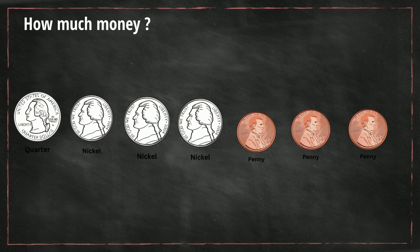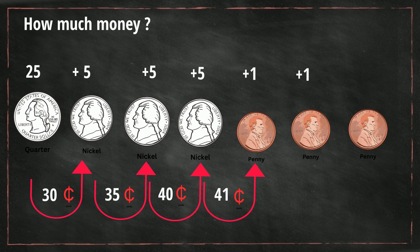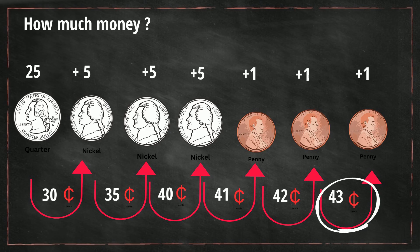For this one we start with 25 cents which is a quarter, and add 5 cents which is 30 cents. And then add another 5 cents which is the nickel, so now we're up to 35 cents. And then add another nickel and that becomes 40 cents. And then one penny is 41 cents, second penny is 42, and then the third penny is 43. So we have 43 cents.